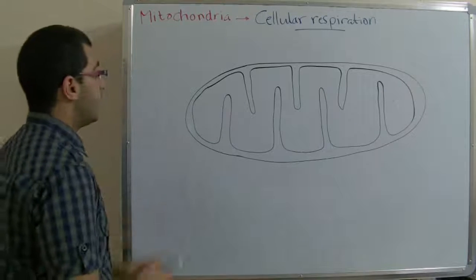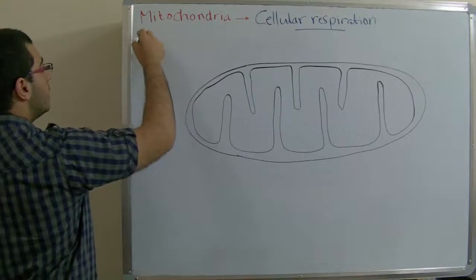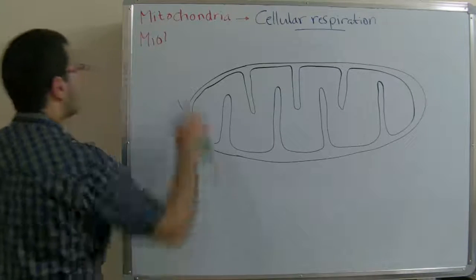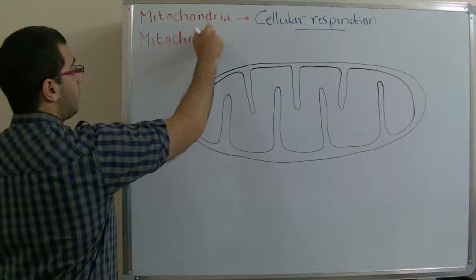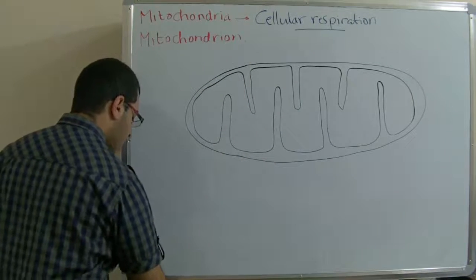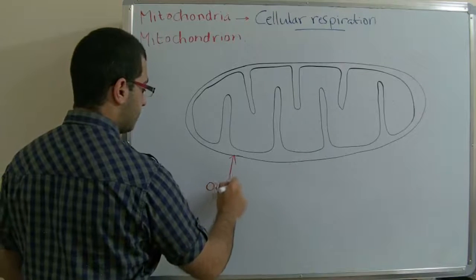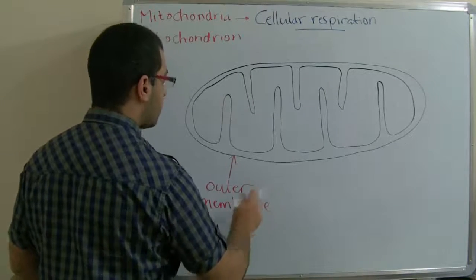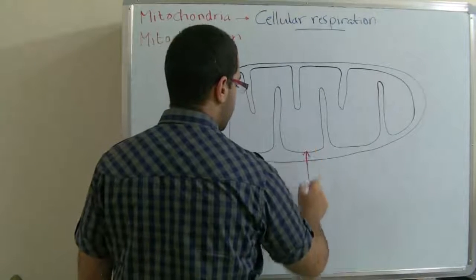This is a mitochondrion, mitochondria is the plural, and the singular is mitochondrion. So this is a mitochondrion. First here we have an outer membrane, which encloses the whole mitochondrion. Then we have an inner membrane.